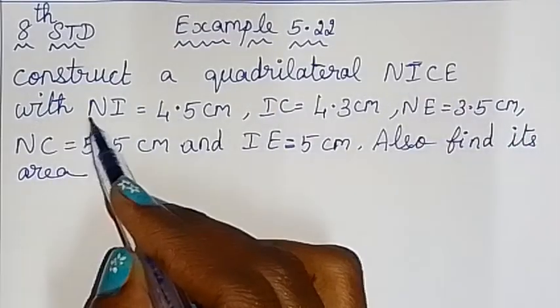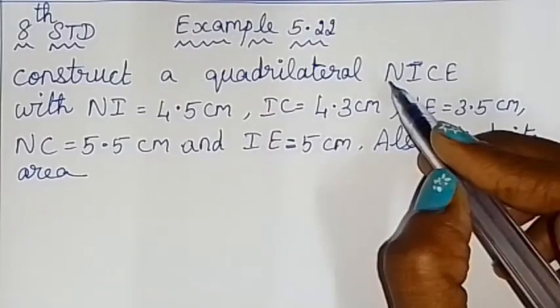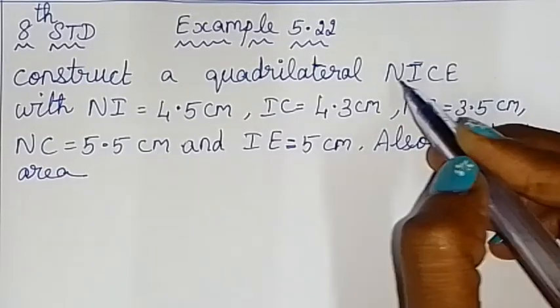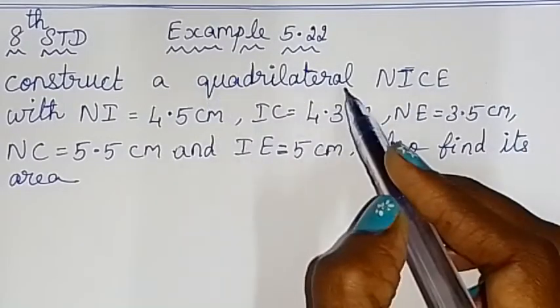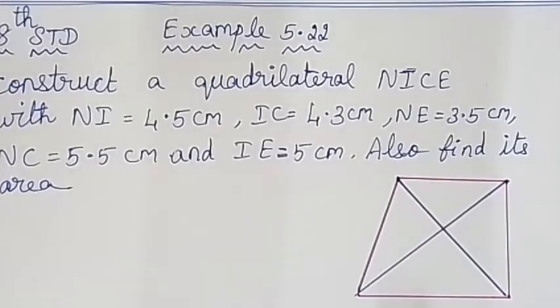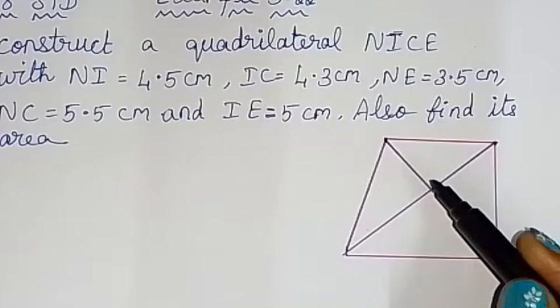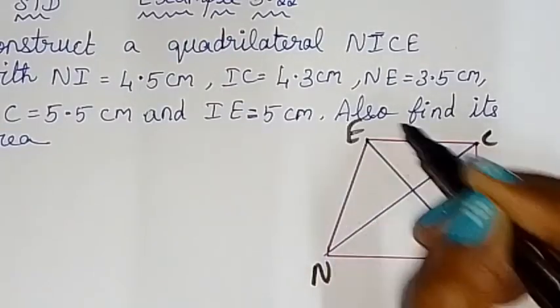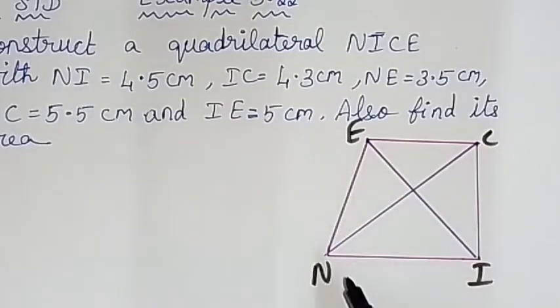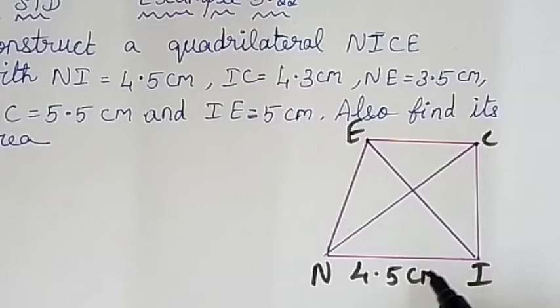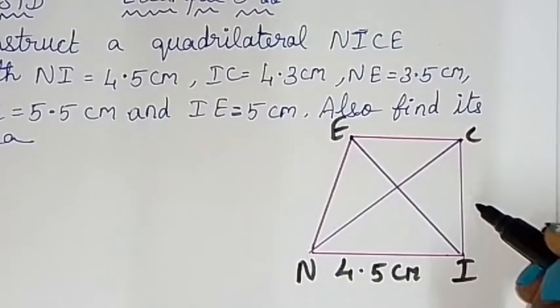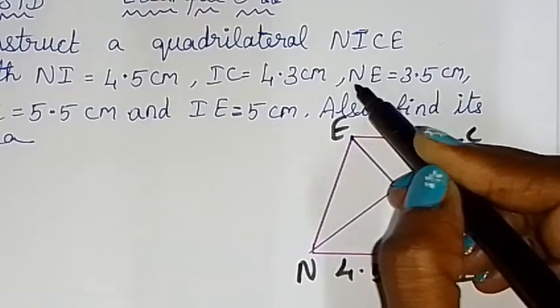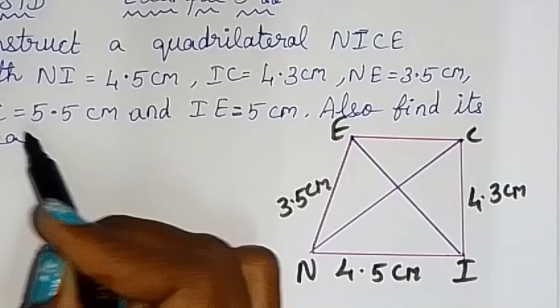Construct a quadrilateral NICE with these measurements and find its area. NICE is a quadrilateral, a four-sided polygon. The measurements are: NI equals 4.5 cm, IC equals 4.3 cm, NE equals 3.5 cm, and NC equals 5.5 cm.